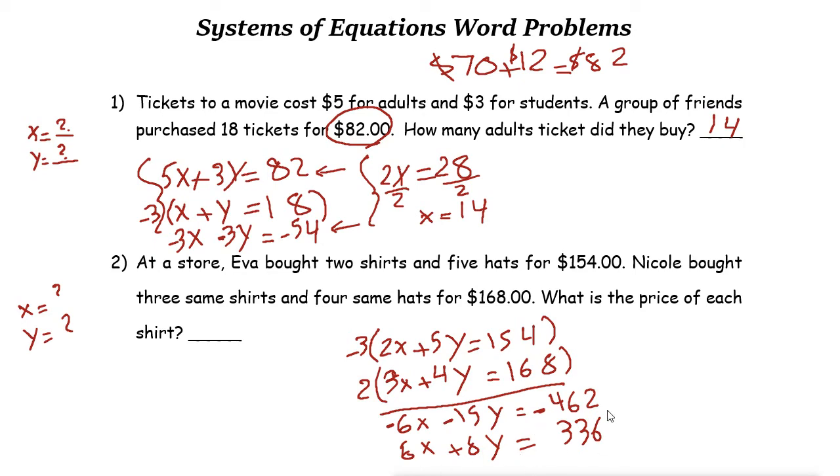Now you can add these two equations. If you add them, the X terms cancel out. Negative 15Y plus 8Y is negative 7Y equals negative 462 plus 336, which is negative 126. If you divide both sides by negative 7, Y equals 18.